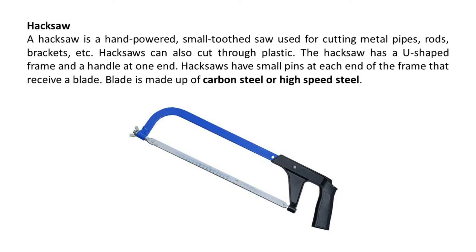A hacksaw is a hand-powered, small-tooth saw used for cutting metal pipes, rods, brackets, etc. Hacksaws can also cut through plastic. The hacksaw has a U-shaped frame and a handle at one end. Hacksaws have small pins at each end of the frame that receive a blade. The blade is made up of carbon steel or high-speed steel.